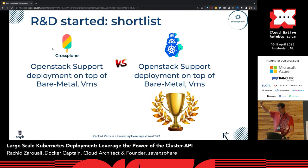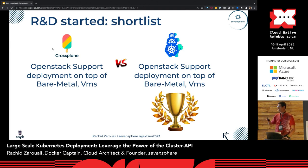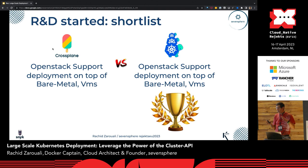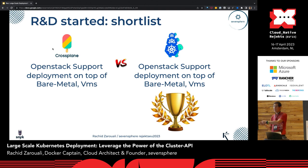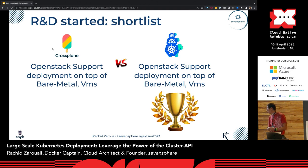In this case, Cluster API won — especially because OpenStack support in Crossplane was not that stable, and Crossplane leverages a different mechanism: it triggers APIs, and those APIs have the responsibility to deploy the bare metal and then deploy the Kubernetes clusters. This wasn't exactly what we were looking for.